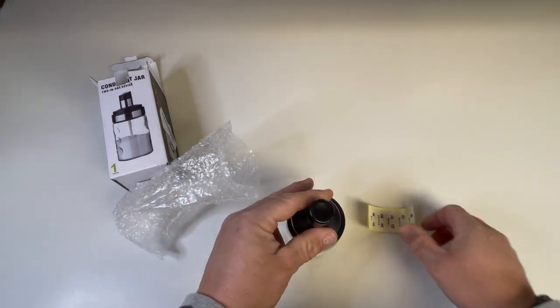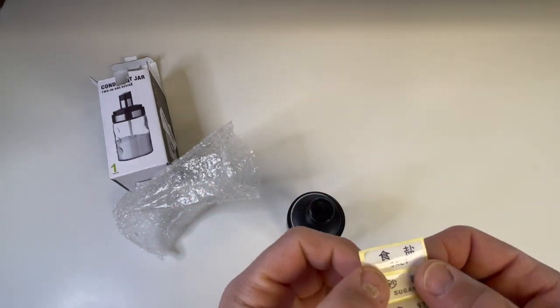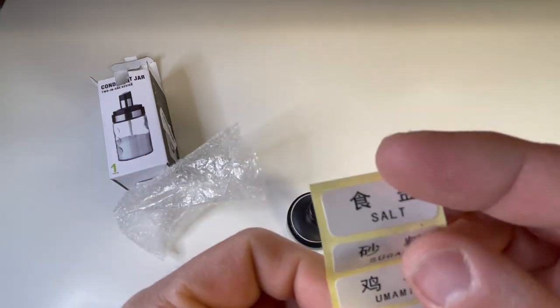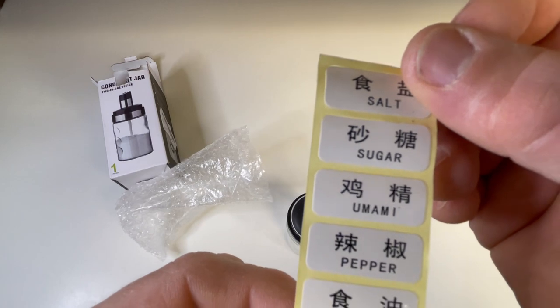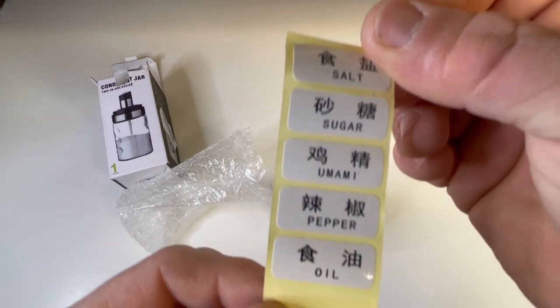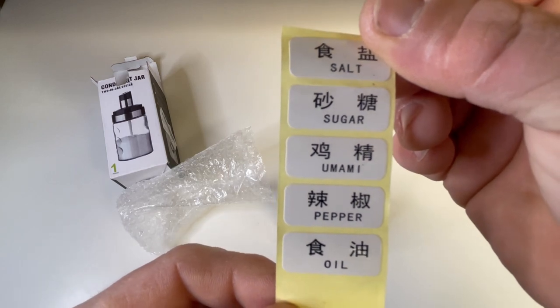So, if you didn't know, that's how you say salt in Chinese. And that's how you say sugar. And that's how you say umami. And that's how you say pepper. And that's how you say oil. I may be wrong.